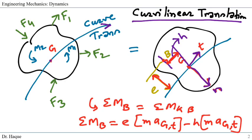We can write the moment equation about point B. So sum of all external moments due to external forces at point B will be equal to sum of all kinetic moments about point B. This will equal e times the acceleration tangential component, and then the negative multiplication of h times the mass times the normal component of the acceleration.